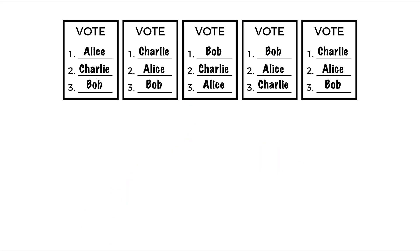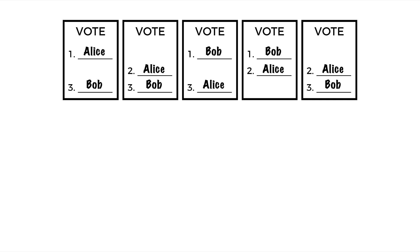Let's take a look at an example of a ranked pairs election. Here's an election with three candidates — Alice, Bob, and Charlie — and five voters. We're going to consider each pair of candidates one at a time. Starting with Alice and Bob: three of the five voters think Alice is better than Bob, and two think Bob is better than Alice. So Alice would have won if it was just between the two of them. To represent that, we draw an arrow pointing from Alice to Bob.